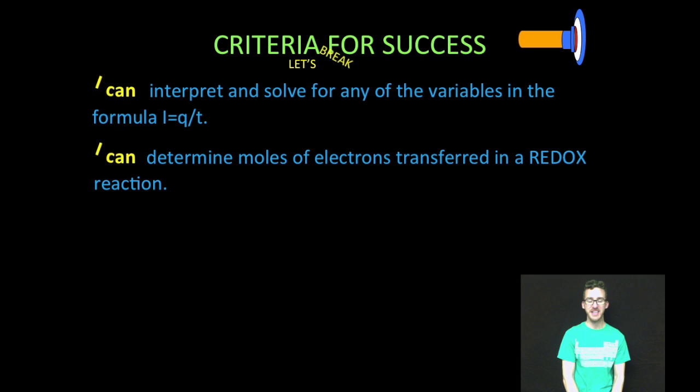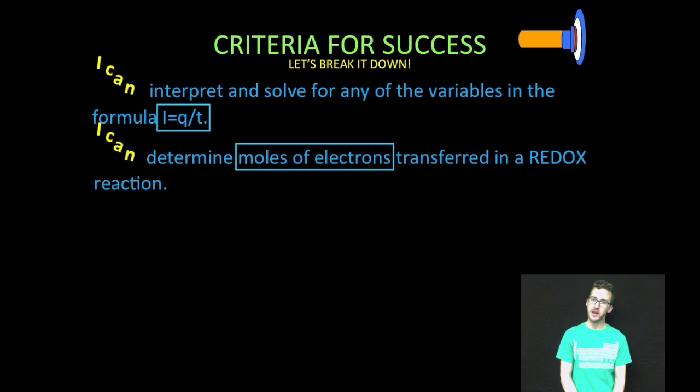So breaking it down as always, numero uno, we are going to interpret and solve for any of the variables in the formula I equals Q over T. And then numero dos, we are going to determine moles of electrons transferred in a redox reaction, which is going to be important as you'll find out as we try to apply that formula I equals Q over T to electrolytic cells.